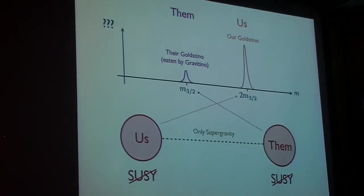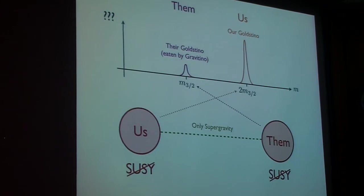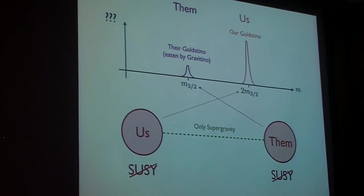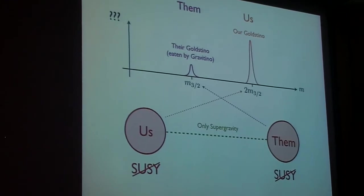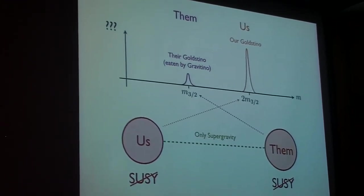A measurement that would confirm this would be quite dramatic. It would tell you not only that supersymmetry is correct, but that there's extra hidden structure in our universe that we're only barely being able to scratch the surface with a collider like the LHC.